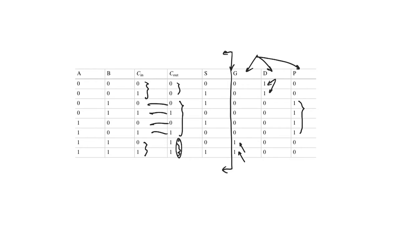We encode the state of carry out using these three bits: generate, delete, and propagate. What's interesting is that G, D, and P can be defined exclusively in terms of A and B. In an N-bit adder, A and B are ready at the start of operation — at time zero — so G, D, and P are also ready at the start of operation.